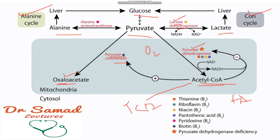One more thing to note: pyruvate carboxylase requires vitamin B7. Alanine aminotransferase, ALT, requires vitamin B6. Lactate dehydrogenase requires the cofactor niacin, or vitamin B3. While the pyruvate dehydrogenase complex requires many cofactors.